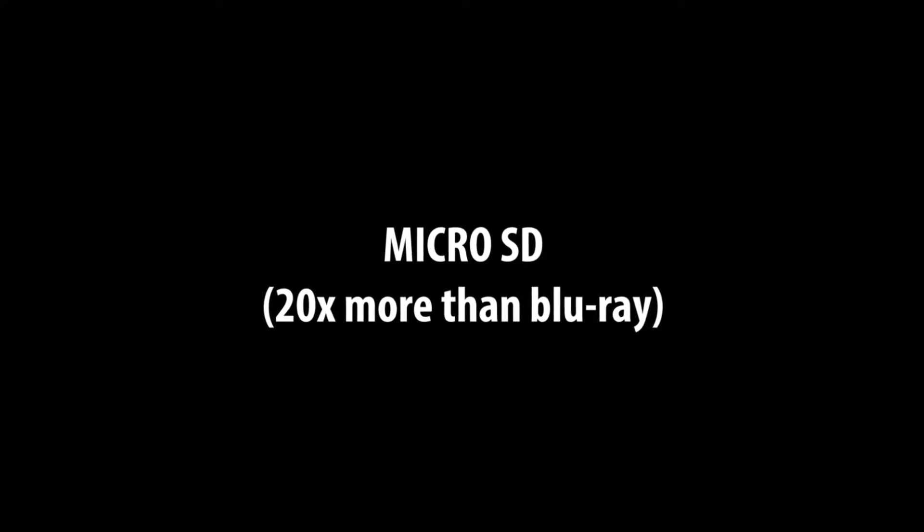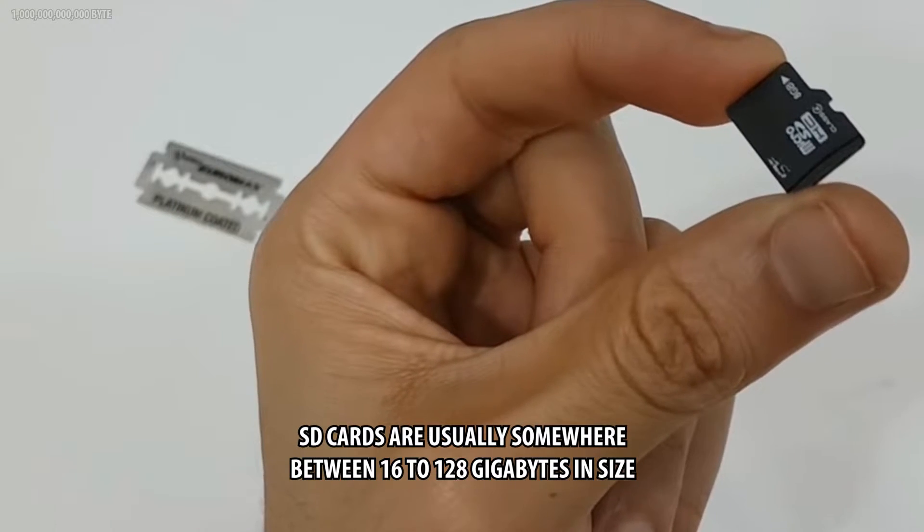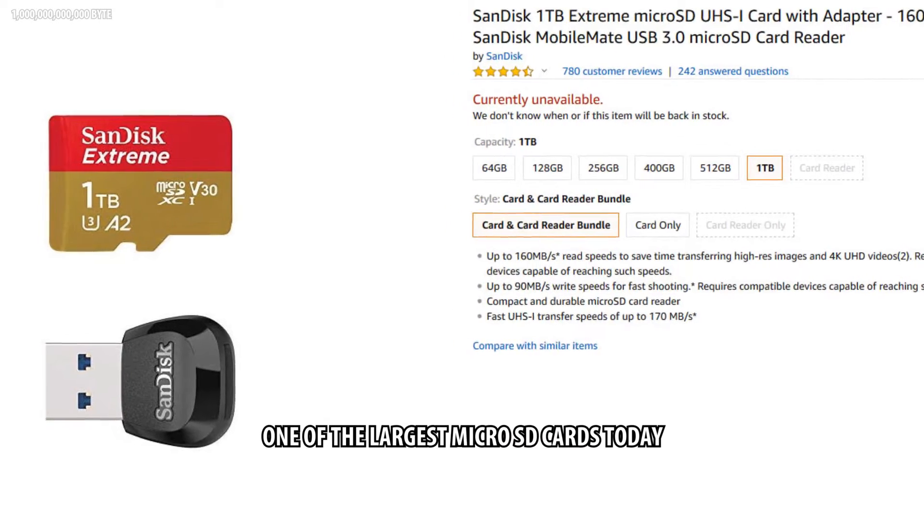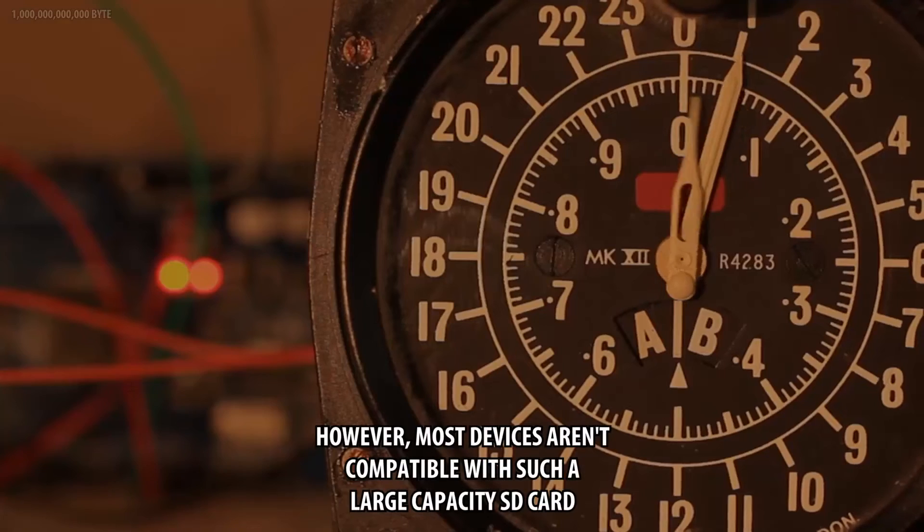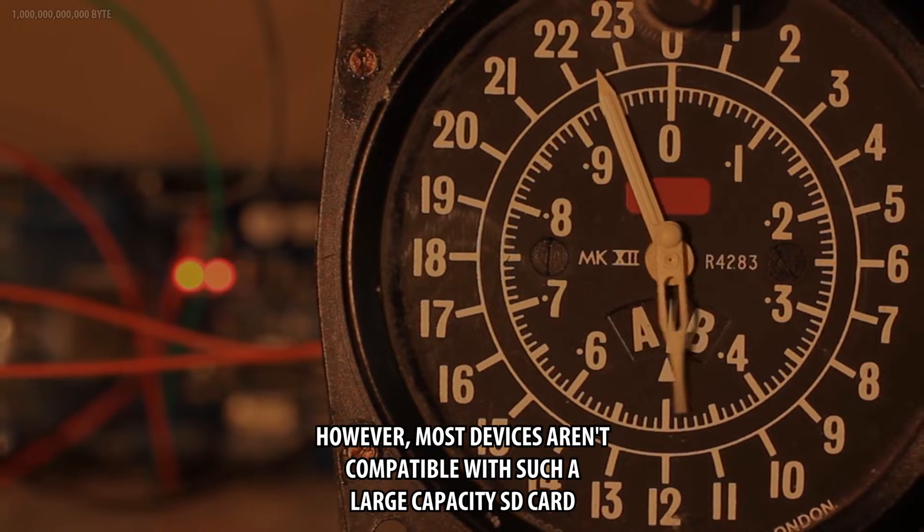Micro-SD, 20 times more than Blu-ray. SD cards are usually somewhere between 16 to 128 gigabytes in size. One of the largest micro-SD cards today has a storage of 1 terabyte. However, most devices aren't compatible with such a large capacity SD card.